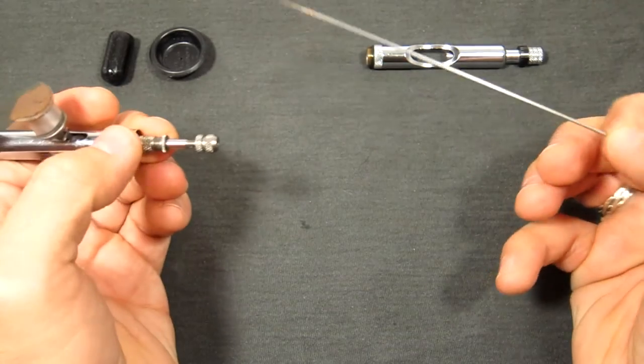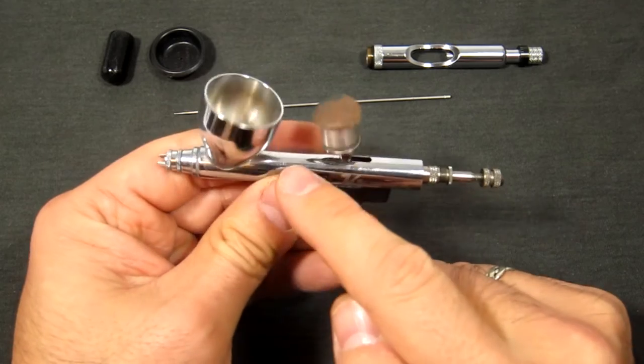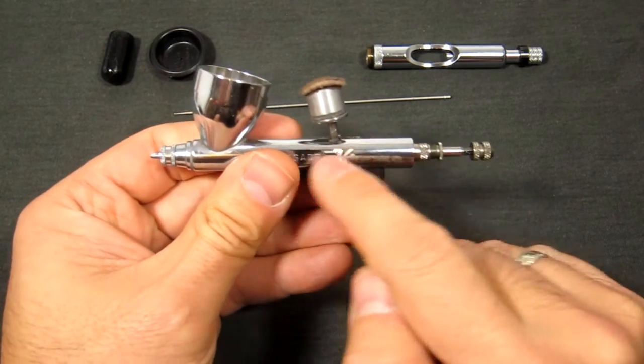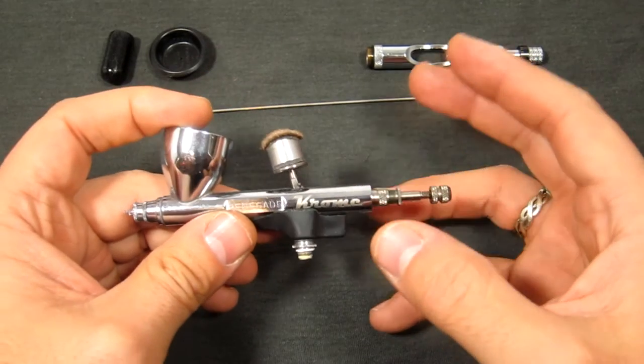Pull the needle out. Now some people do like to pull the needle out through the front, which helps keep paint from getting into the air valve area. I haven't had any problem with that really unless I've been very messy.